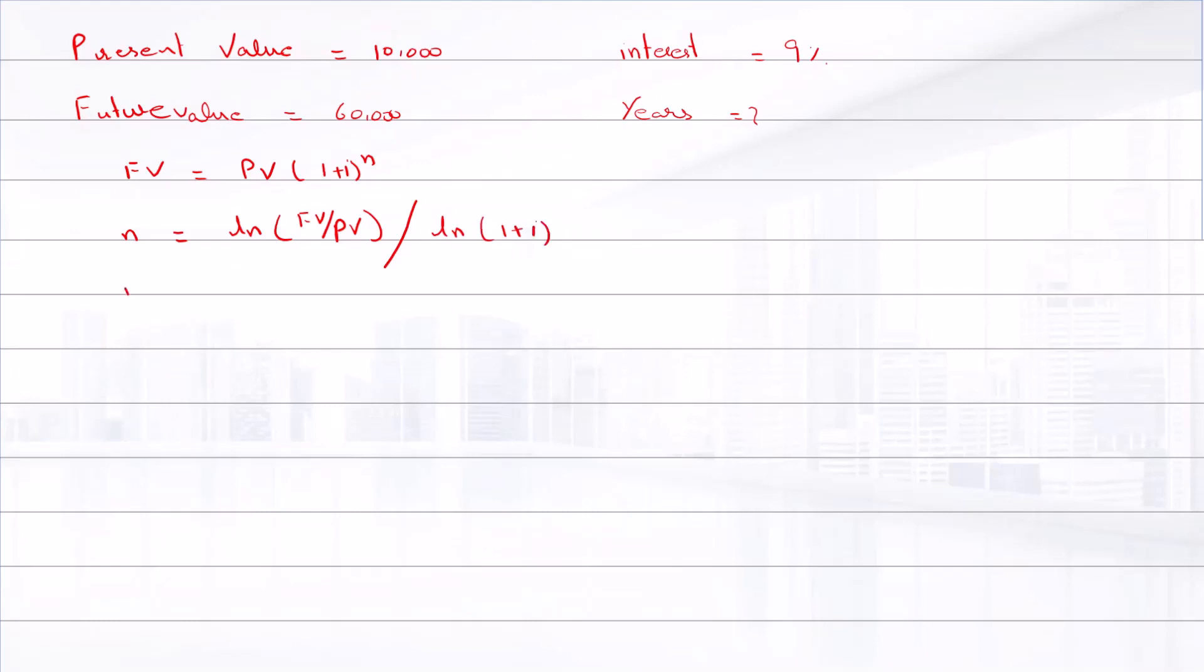And n is equal to log of sixty thousand divided by ten thousand, and whole divided by log of one plus 0.09.